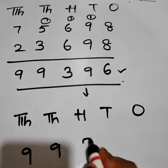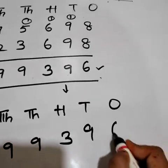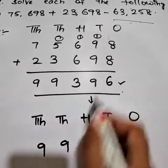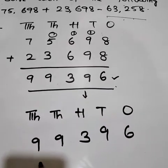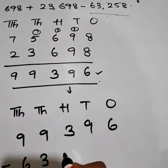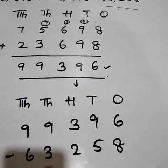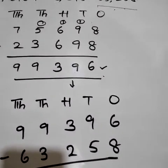I am taking here 99,396 because we got here. So what we have to do? We have to subtract with 63,258. Let us start.